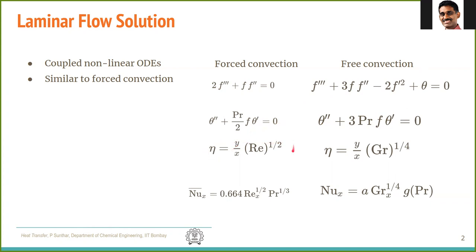The similarity variable η used here was y/x times √Re. In free convection, Re² = Gr, or Re = Gr^(1/2), so the similarity variable becomes proportional to Gr^(1/4). For forced convection, the Nusselt number correlation was Re^(1/2)·Pr^(1/3). Similarly, the Nusselt number correlation for free convection is some constant times Gr^(1/4), with a different dependence on Prandtl number.